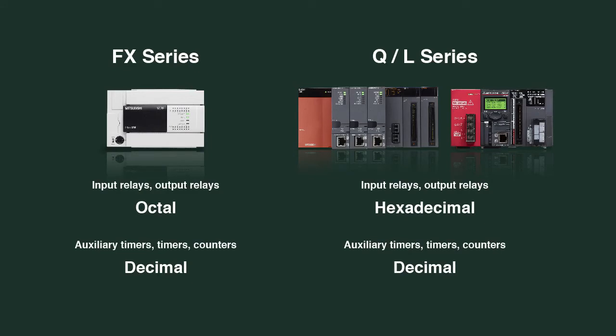Devices can be numbered in decimal, octal, or hexadecimal. Numbering system depends on the PLC. Decimal numbers produce a carry every 10 points. One zero is coming after 0 through 9.